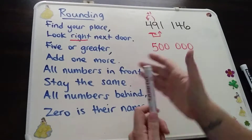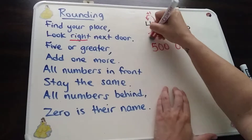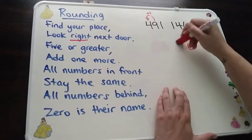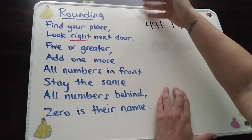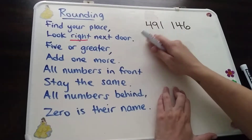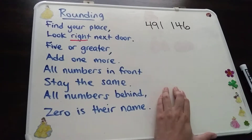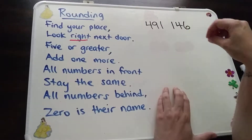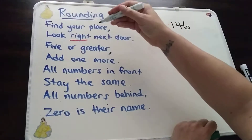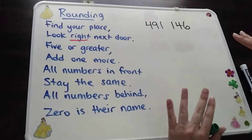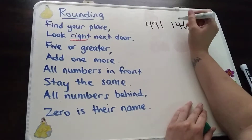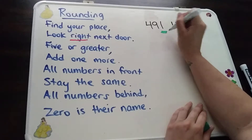Let's do another example with the same number, just so you can see the difference. So I'm going to go back to my original number and get rid of all my work from the old one, so we have a nice clear place to work. We're going to do the same thing again, but this time we're going to round it to the nearest thousands place. I'm still going to use the poem — it's still going to work for every single one. So find your place, rounding to the nearest thousand. Here it is — there's a one there.